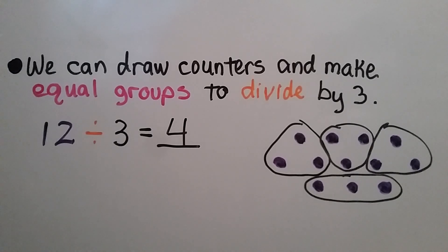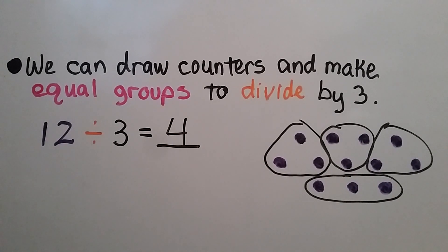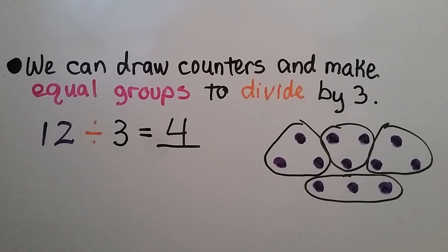We can draw counters and make equal groups to divide by 3. Our problem is 12 divided by 3. We make 12 little counters. We circle groups of 3. Then we count how many groups we made. We have 4 groups. 12 divided by 3 is equal to 4.